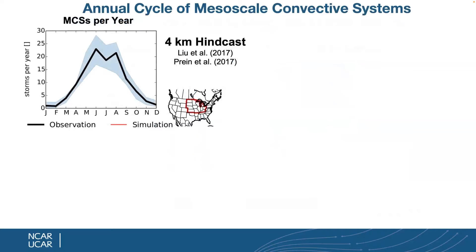We were very excited at NCAR when we got the Yellowstone supercomputer, and we thought the MCSs over the whole US would look great. I tracked MCSs in the central US over a 13-year period. In summertime the peak season has almost an MCS every day. The simulation matched observations very well up through June. But in July, August, and September we were very disappointed — we had only about a third of the observed MCS count, even worse than a 12-kilometer model. This is a reanalysis-downscaled simulation, I should note.